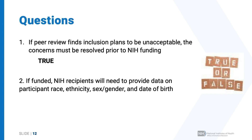Next question: if funded, NIH recipients will need to provide data on participant race, ethnicity, sex or gender, and date of birth — true or false? This is false. NIH does not collect date of birth for privacy reasons. If you submitted an application January 25, 2019 or later, you will be expected to submit progress reports with data on participant race, ethnicity, and sex or gender, but you'll provide age at enrollment rather than date of birth.